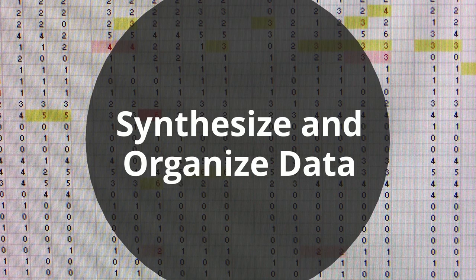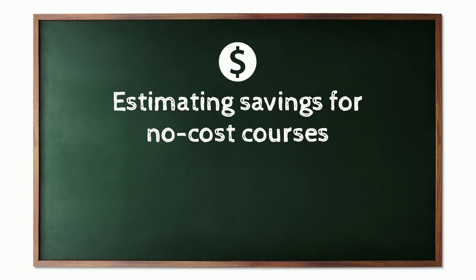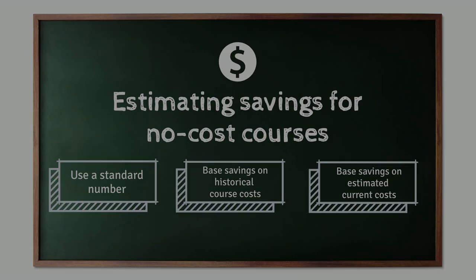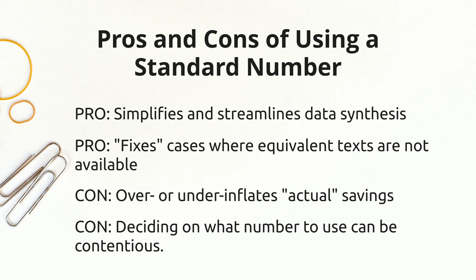Once you have your data, you need to synthesize and organize it. You can use a standard number, base savings on historical course costs, or base savings on estimated current course material costs when estimating student savings for the use of OER and other no-cost course materials. Personally, I use a standard number at my institution. There are pros and cons of using a standard number to estimate savings. Pros include that it simplifies and streamlines your data synthesis, and that it fixes cases where equivalent texts are not available. Cons are that it over- or under-inflates actual savings, though a true average should even out once you have a high adoption number, and deciding on what number to use as your standard savings number can be contentious.